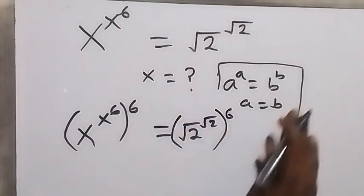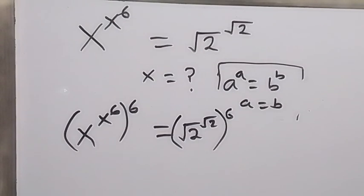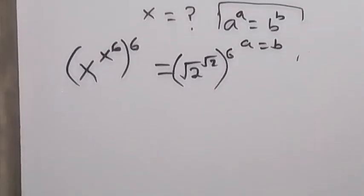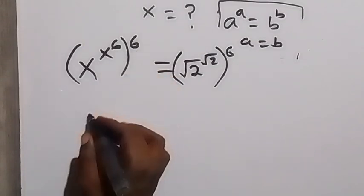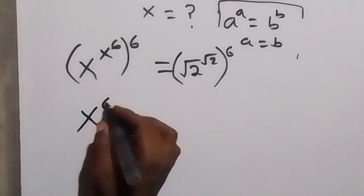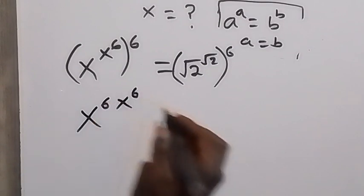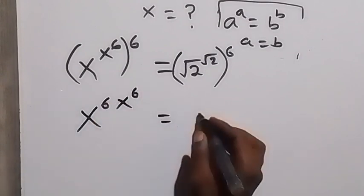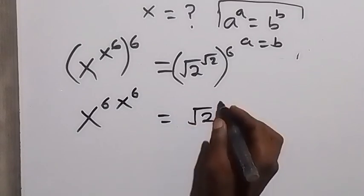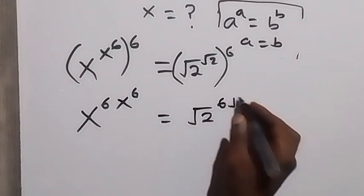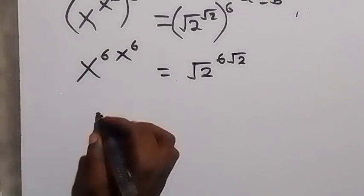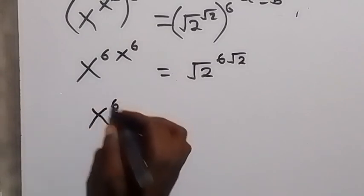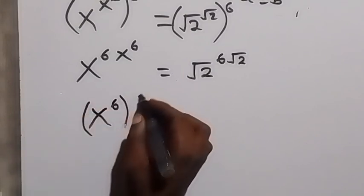When we apply the law of indices, we discover that the powers multiply out, and we can write this as x raised to power 6, then x raised to power 6. On the right side we have root 2 raised to power 6, then root 2. We apply the bracket, so we have x raised to power 6, into bracket x raised to power x raised to power 6.